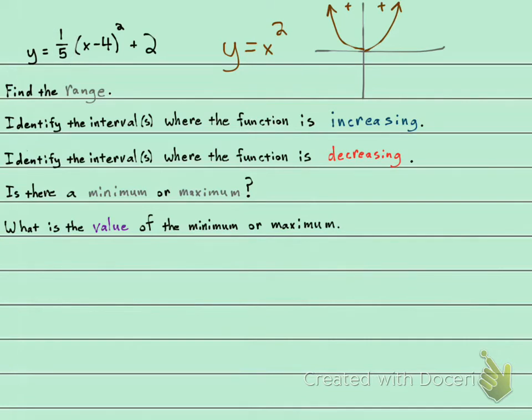We have this minus 4, which is going to be a shift 4 to the right. And we have a plus 2, which is going to be a shift 2 up. And we'll look at that in a little more detail.